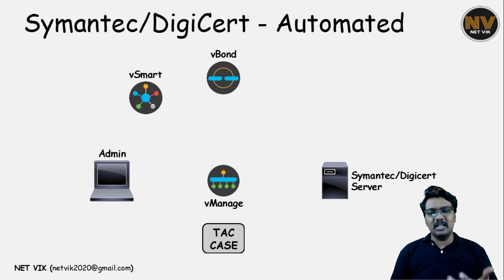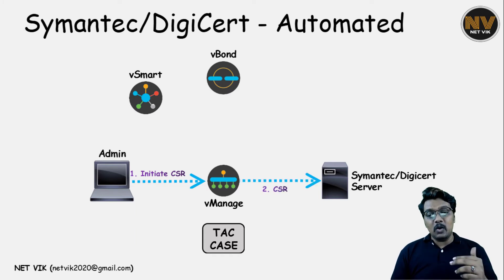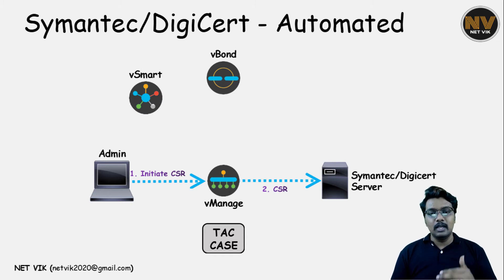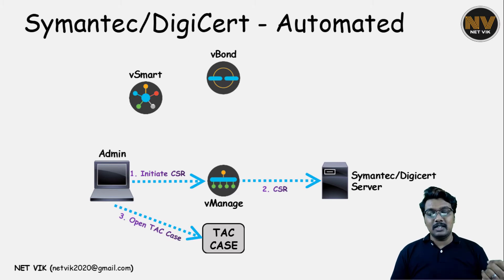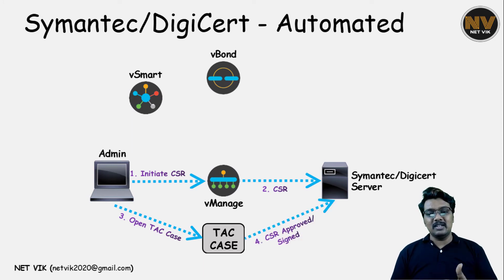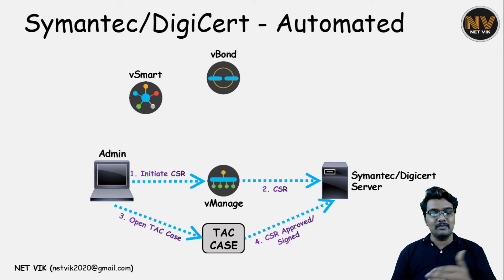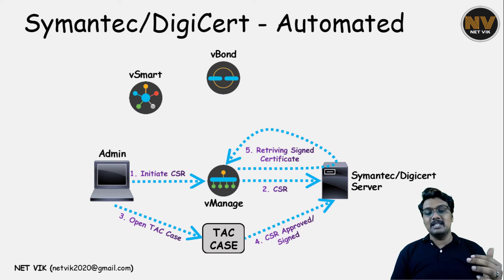Let us assume that we want to sign the vManage itself. The administrator logs into the vManage GUI and then initiates a CSR — a certificate signing request. vManage will automatically submit that CSR to the Symantec or DigiCert CA server available online. For this, the vManage needs successful DNS resolution and internet access. The third step is the administrator opens up a TAC case to get this approved. The TAC engineer logs in — or it is a back-end process from the TAC team — and they approve the CSR submitted by the vManage.